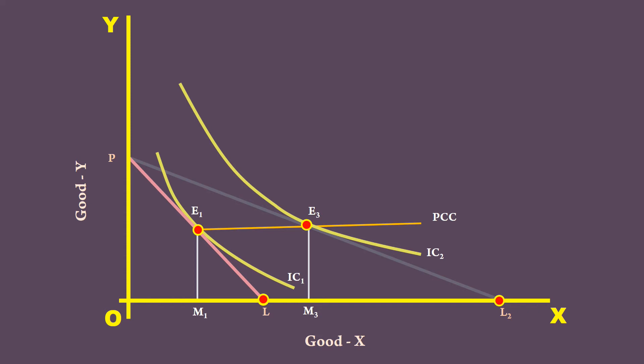With an increase in income, the price line PL moves to the right and becomes tangent to IC2 at point E2. This is an equilibrium point. The new price line is P1-L1. The consumer moves from E1 to E2 along the income consumption curve. He buys M2 units of Good X. The net increase M1-M2 is due to income effect.